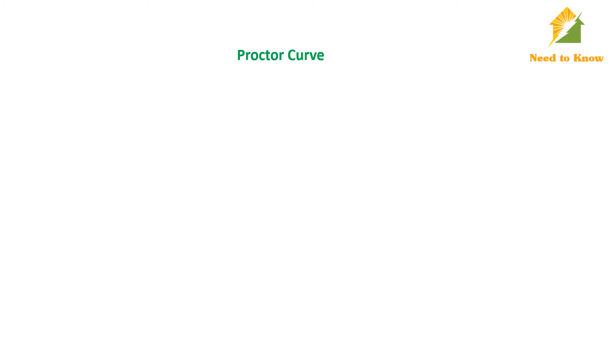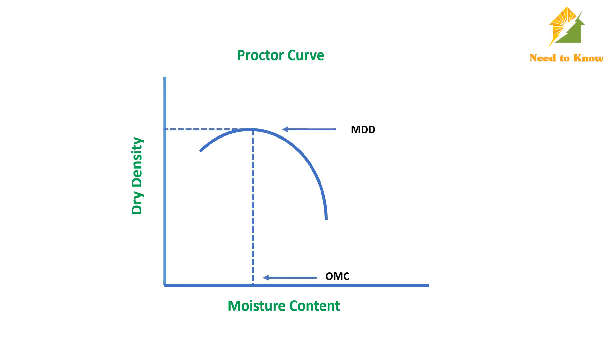Proctor curve is the graphic plot of dry density versus moisture content, which creates a well-defined curve that shows the effect of moisture on the soil during compaction. From the Proctor curve, MDD and OMC are obtained.